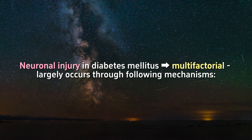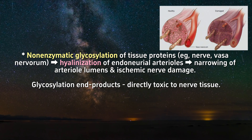Neuronal injury in diabetes mellitus is multifactorial but largely occurs through the following mechanisms. Non-enzymatic glycosylation of tissue proteins — for example, nerve and vasa nervorum — results in hyalinization of endoneurial arterioles, leading to narrowing of the arteriole lumens and ischemic nerve damage.